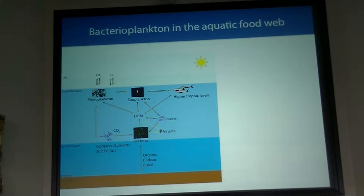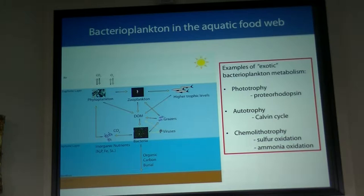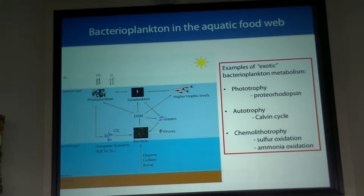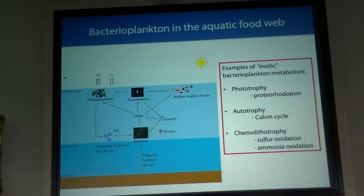Bacteria are a lot more exotic than that classic view. There are bacteria typically thought to be heterotrophic that are also phototrophic — they can use light as an energy source. There are heterotrophic bacteria that under some conditions can also grow autotrophically, having enzymes like the Calvin cycle for CO₂ fixation. There are even more exotic metabolisms: chemolithotrophs are bacteria that use inorganic chemicals as energy sources. Our group is very interested in organisms that use sulfur and ammonia as energy sources, and how these metabolisms influence nitrogen cycling, sulfur cycling, and carbon cycling in the ocean.